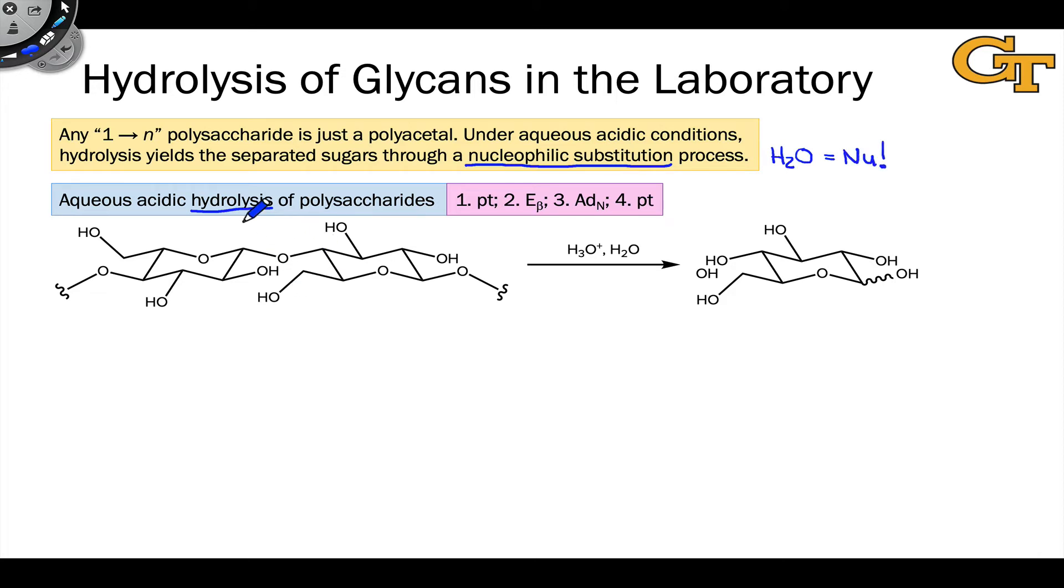So how does this work mechanistically? Well, in the first elementary step, we protonate the oxygen that's going to depart as a leaving group. And it helps, I think, here to focus on the glycosidic linkage and, in particular, on the acetal that's part of the glycosidic linkage. So here we have an acetal.